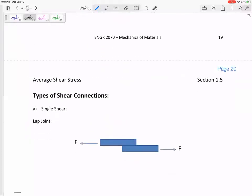All right, now there's two types of shear connections, single shear and double shear. Look at this page and go ahead and look at the next page in our notes. So single shear and double shear.